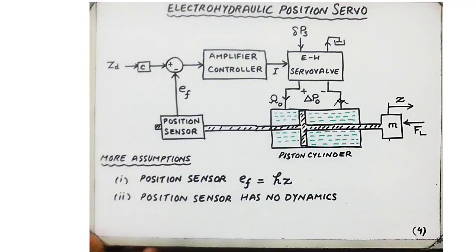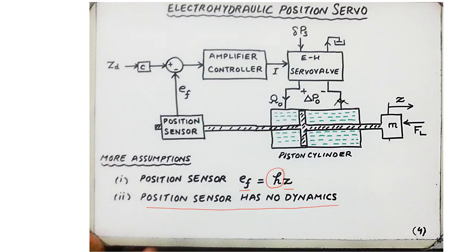The model of the position sensor is particularly simple. The output voltage EF is taken as proportional to the displacement Z of the mass, with H as the constant of proportionality. Furthermore, we assert that the position sensor has no dynamics — its mass or sensing mechanism does not contribute to the dynamics of the electro-hydraulic position servo.